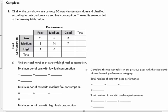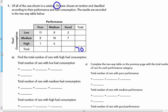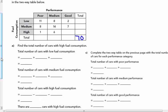Of all the cars shown in a catalog, 70 were chosen at random and classified according to their performance and fuel consumption. The results are recorded in this two-way table below. Altogether there were 70 cars. I'm going to put 70 in the lower right-hand total column because I know altogether there were a total of 70 cars.